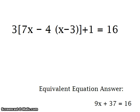Our problem states 3 open bracket 7x minus 4 in parentheses x minus 3, close bracket, plus 1 equals 16. Now, our equivalent equation answer is 9x plus 37 equals 16. That means that after I've worked every single step of this problem, this is what it needs to look like. Let's get started.